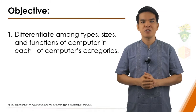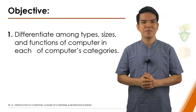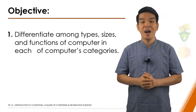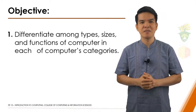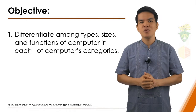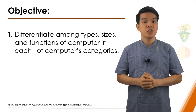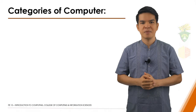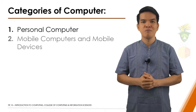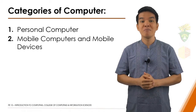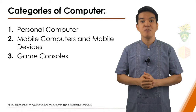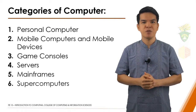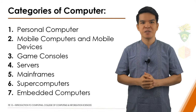How many categories or kinds or types of computers do you know? Industry experts typically classify computers in seven categories: personal computer, mobile computers and mobile devices, game consoles, servers, mainframes, supercomputers, and embedded computers.